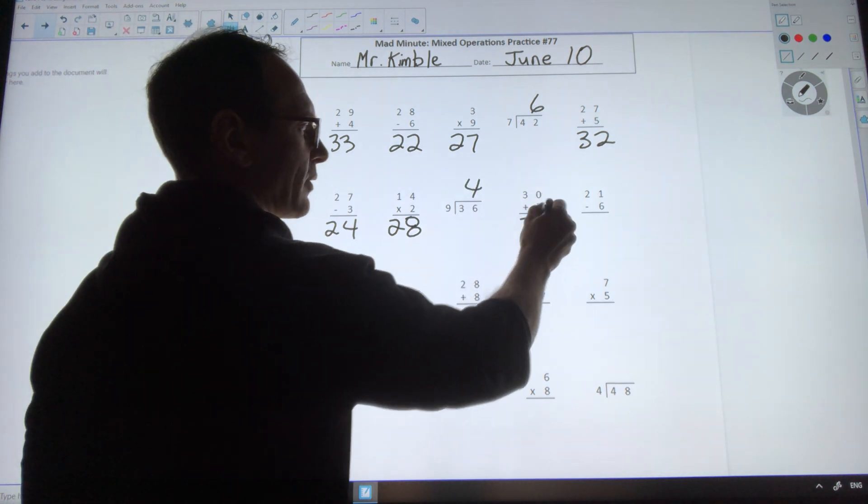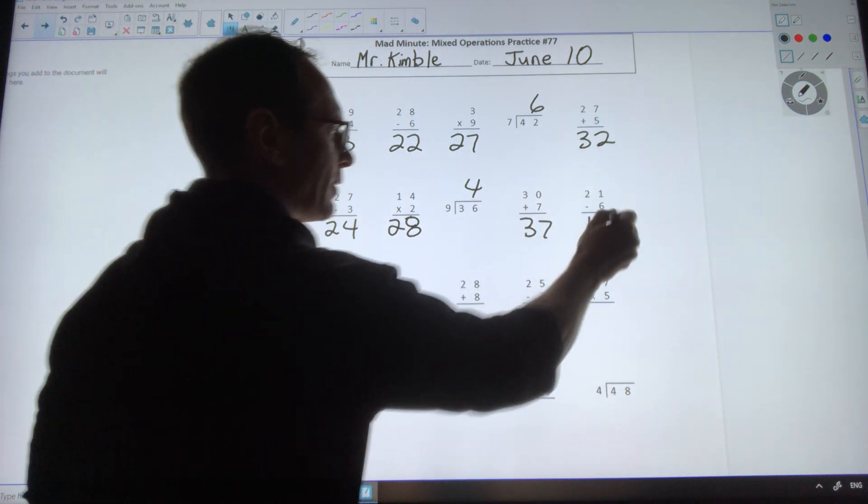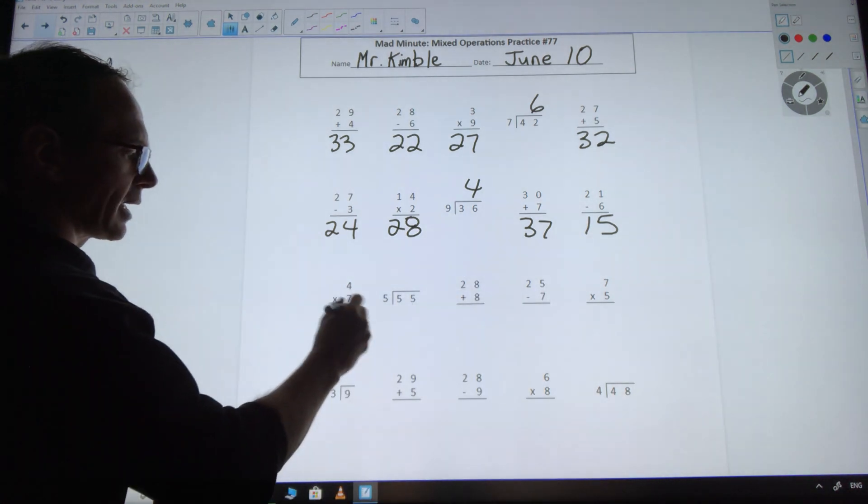30 plus 7 is 37. 21 minus 6 is 15. 4 times 7 is 28. 55 divided by 5 is 11.